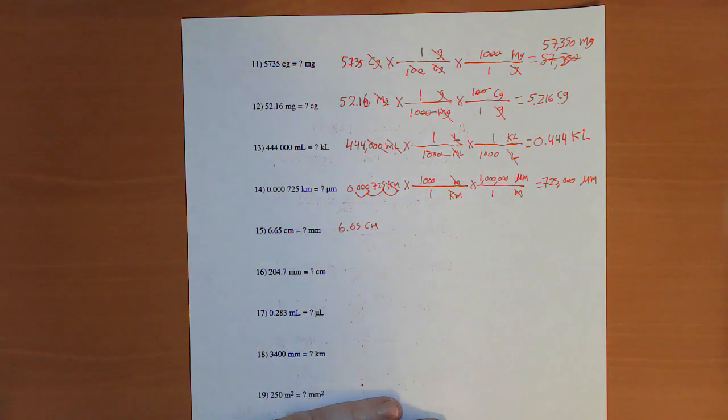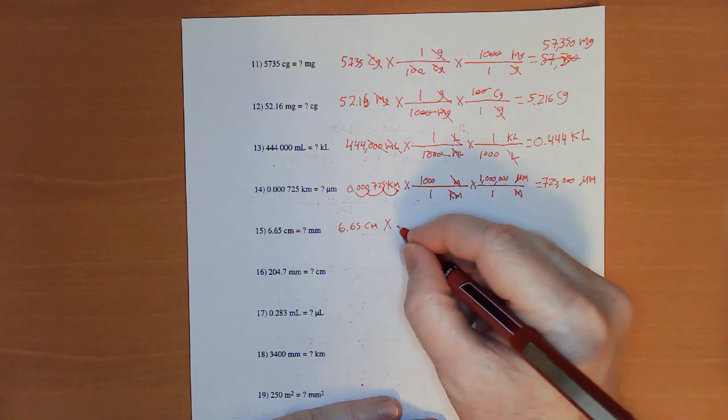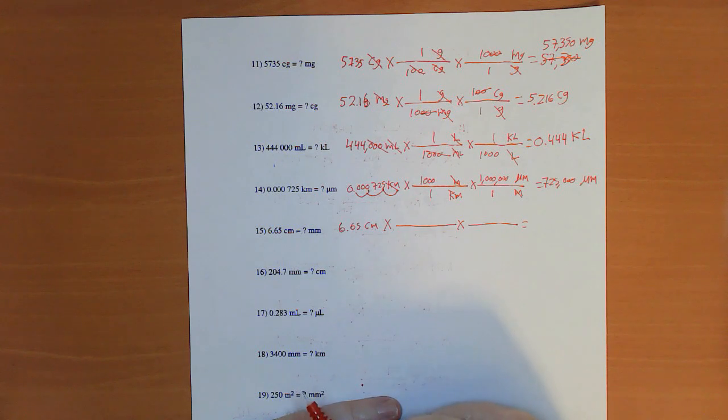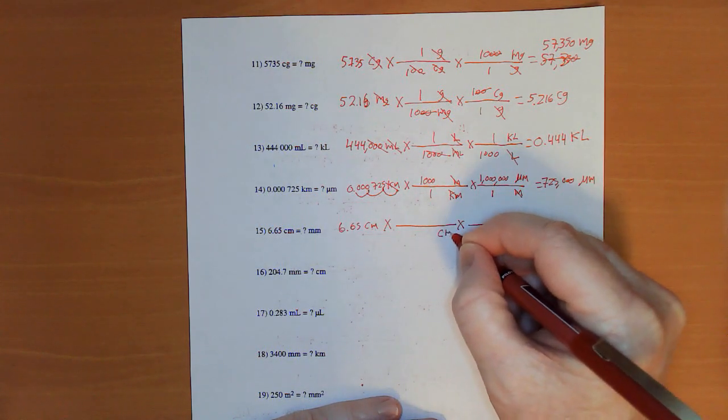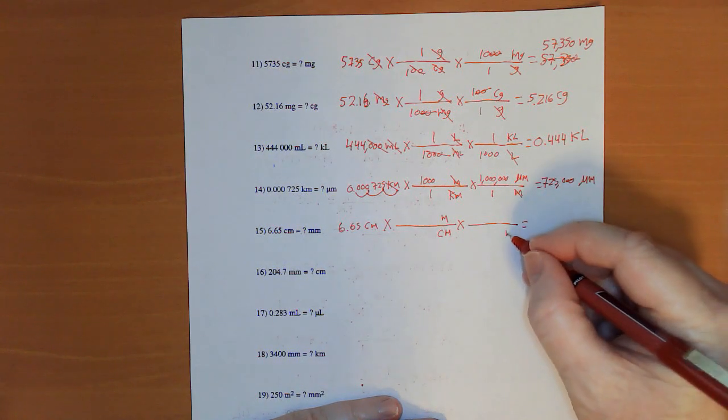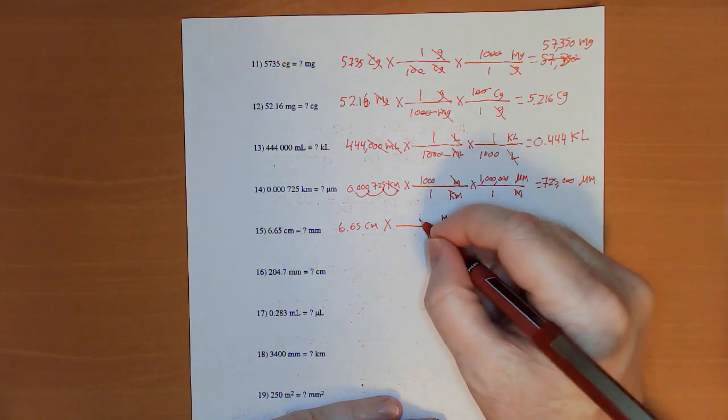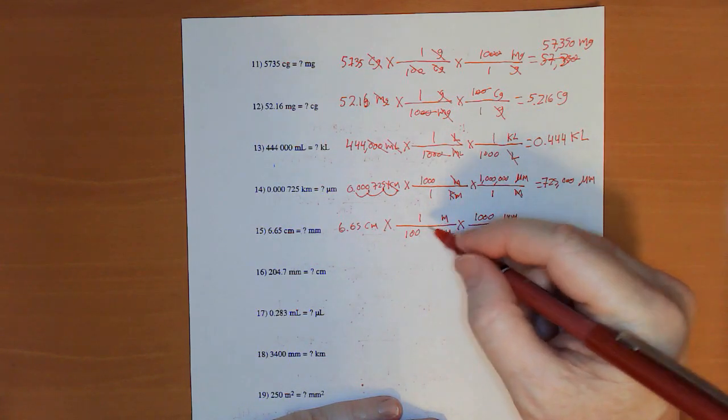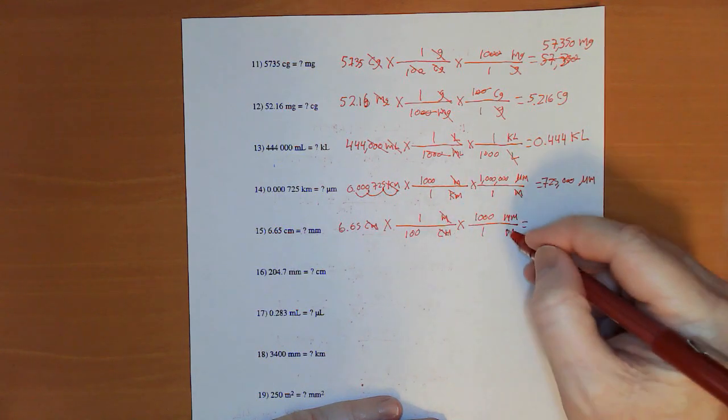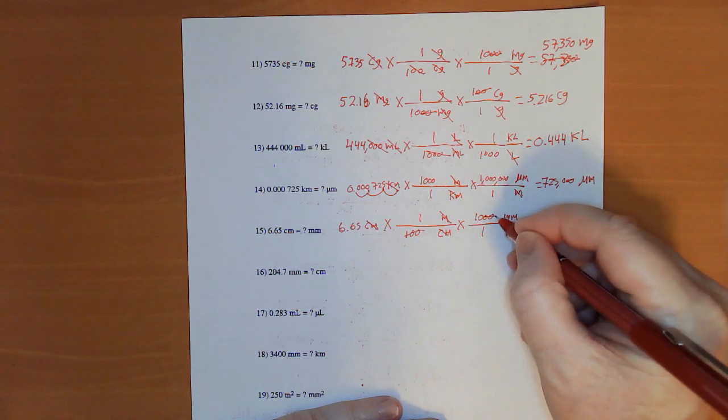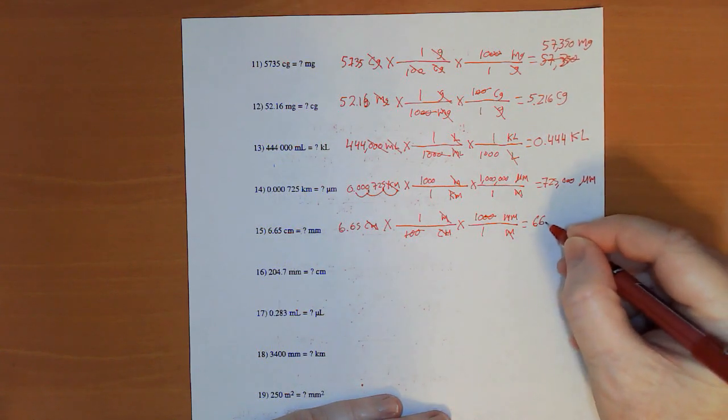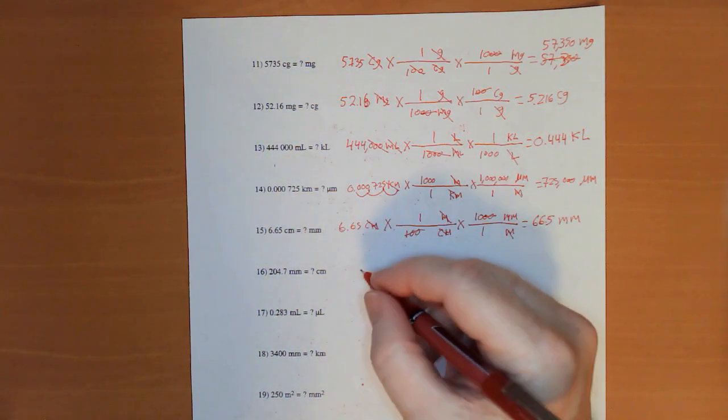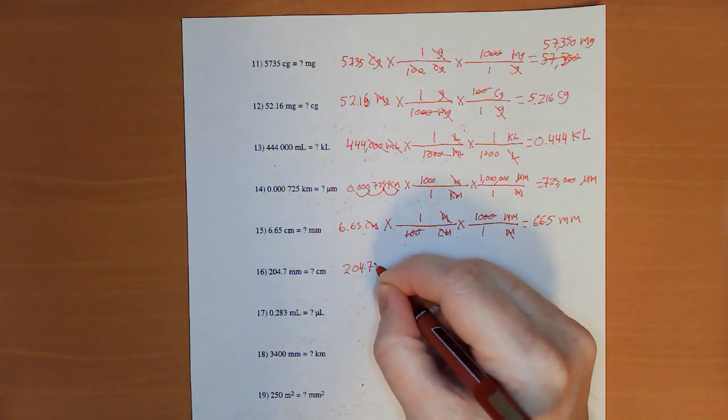6.65 centimeters. Times. I'm kind of setting this up so that you can just pause after each question that you need to check. Centimeters to meters. Meters to millimeters. 1 meter as 100 centimeters. 1,000 millimeters in 1 meter. The centis cancel. The meters cancel. Those two zeros take off those two. 66.5 millimeters.